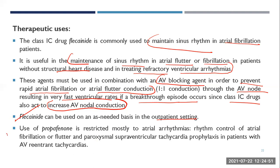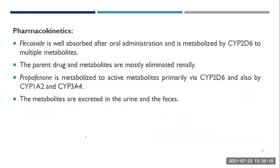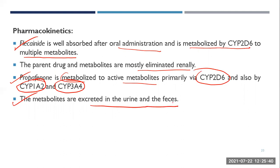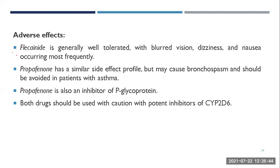Flecainide is used on an as-needed basis in the outpatient setting. Use of propafenone is restricted mostly to atrial arrhythmias: rhythm control of atrial fibrillation or flutter and paroxysmal supraventricular tachycardia prophylaxis in patients with AV re-entrant tachycardias. Pharmacokinetics: flecainide is well absorbed after oral administration and metabolized by CYP2D6 to multiple metabolites; the parent drug and metabolites are mostly eliminated renally.